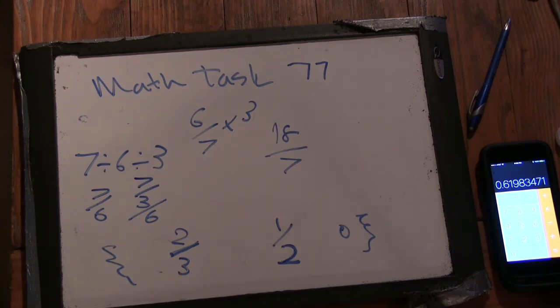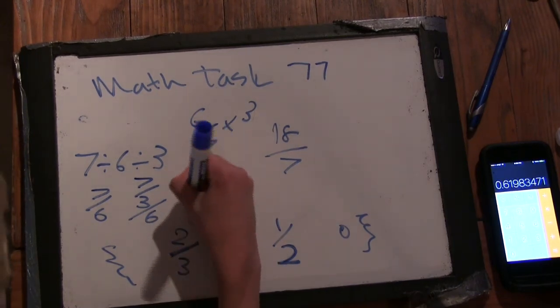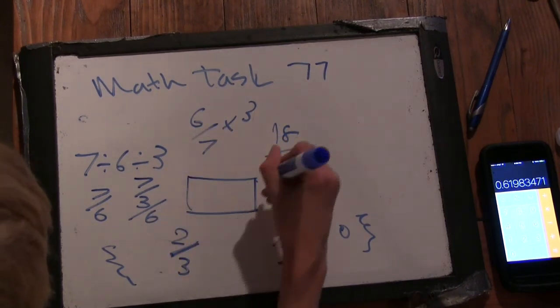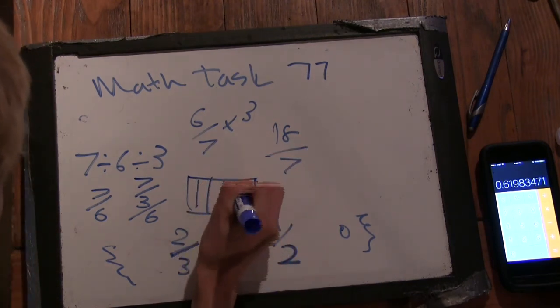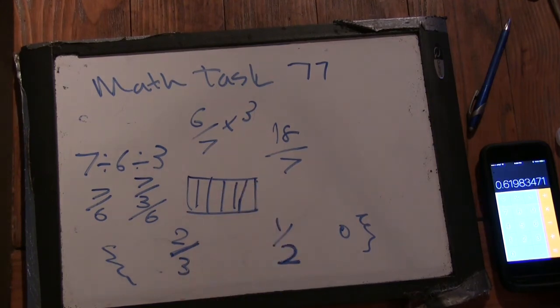How about, what's 1 third divided by 6, do you think? 1 eighteenth. Okay, why? Because you have 1 third and you're dividing it. So it's supposed to be a third. Now you're dividing it into 1, 2, 3, 4, 5, 6 parts.